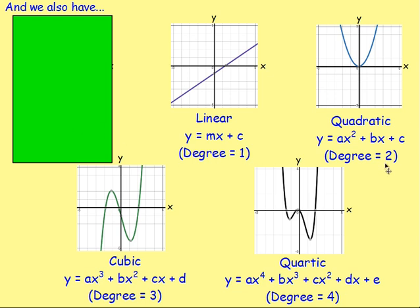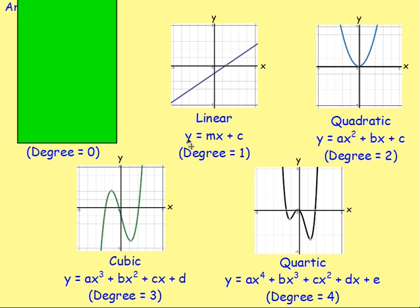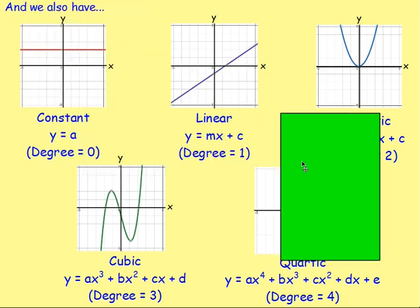Some of you may be thinking, what if it was degree 0? Well, if you had degree 0, it would mean you maybe had something like y equals 2x to the power of 0. And remember, x to the power of 0 is just 1, meaning you would just have y equals some number. And if you've got y equals some number, you've just got your horizontal line looking like that.